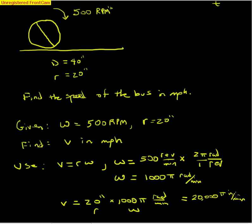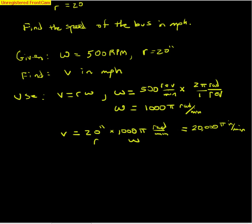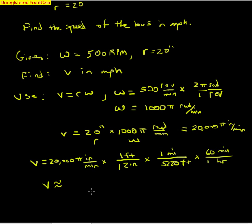The problem is done with the exception of converting that inches per minute into miles per hour, which we will do next. Using the conversion factors, one foot is 12 inches, one mile is 5,280 feet, and 60 minutes is one hour. Multiplying those through, and I use the π symbol on my calculator to get the most accurate result. After rounding, our final answer is approximately 59.5 miles per hour.